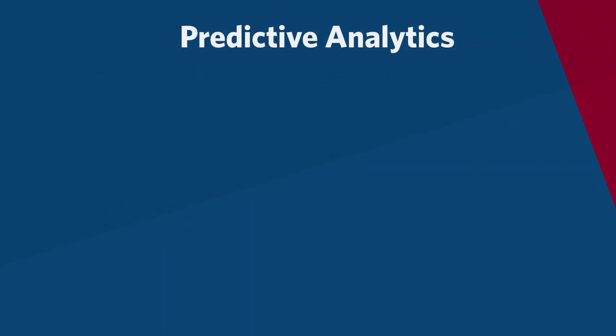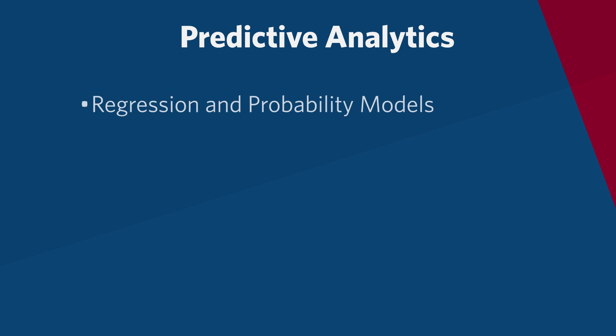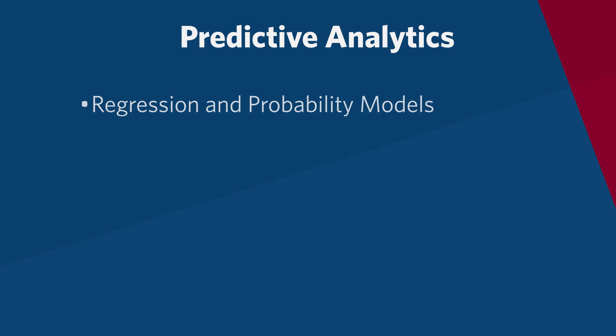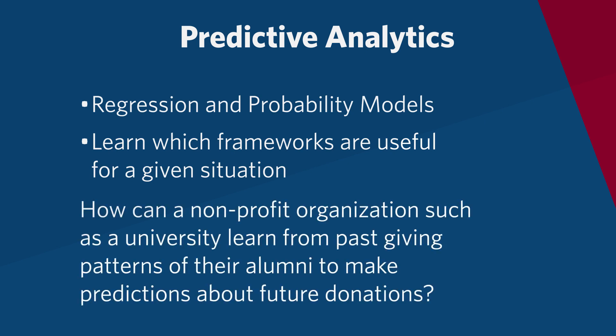We'll then move into looking at how we can make predictions about the future using data — we call this predictive analytics. We'll focus on regression and probability models to understand how to make predictions about the future. You will learn the advantages and limitations of both approaches and be able to determine which framework is more useful for a given situation. For example, how can a non-profit organization, such as a university, learn from past giving patterns of their alumni to make predictions about future donations?